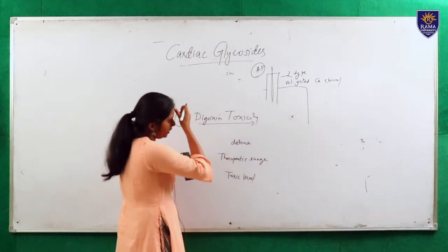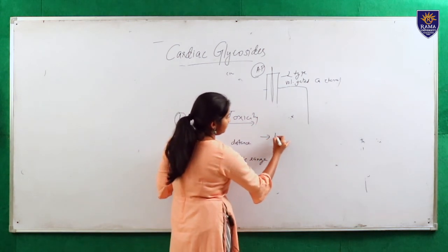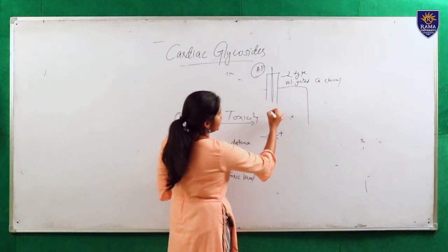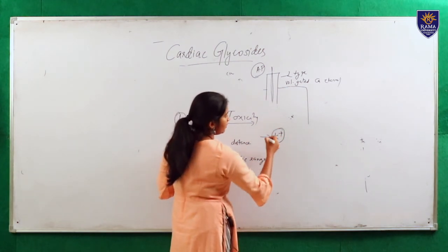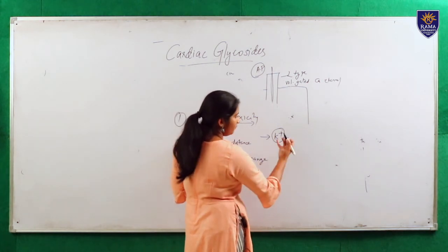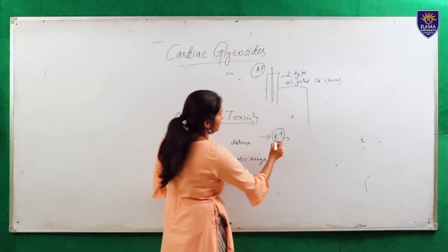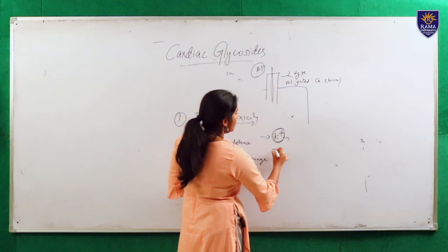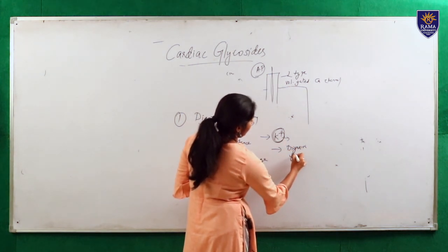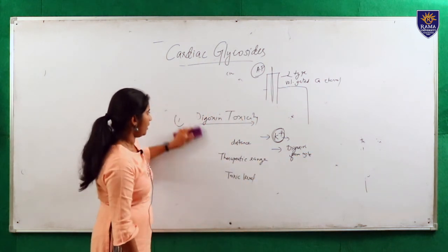The antidote for digoxin toxicity: by blockage of the sodium-potassium pump, intracellular potassium level gets low. When we introduce more potassium — giving potassium to the patient — it will competitively bind to the sodium-potassium ATPase site and thereby easily remove digoxin from the site.